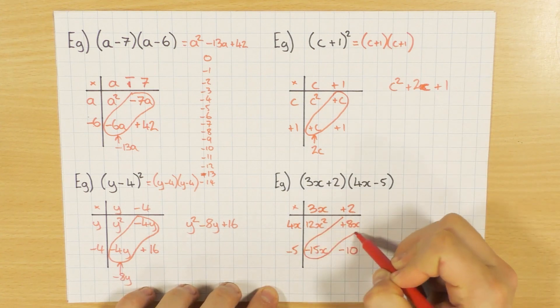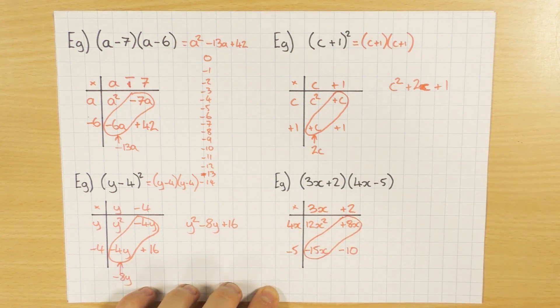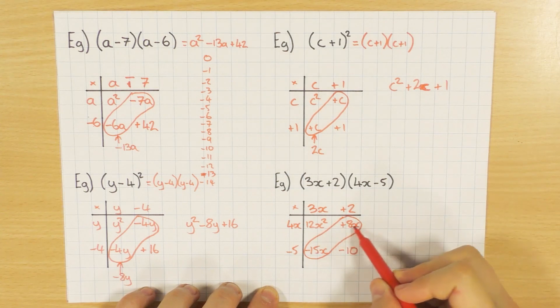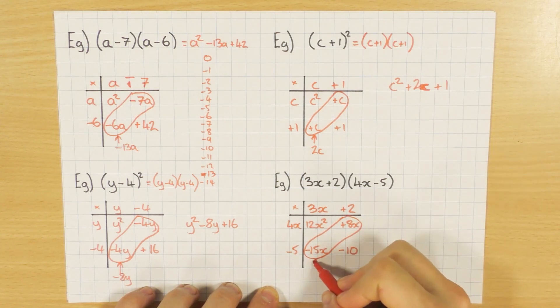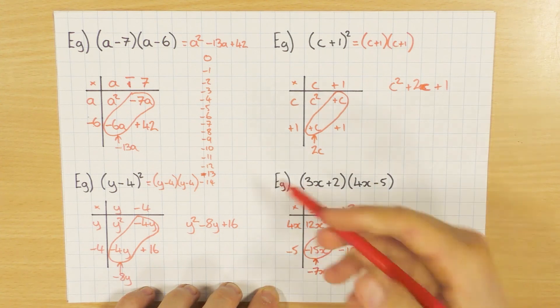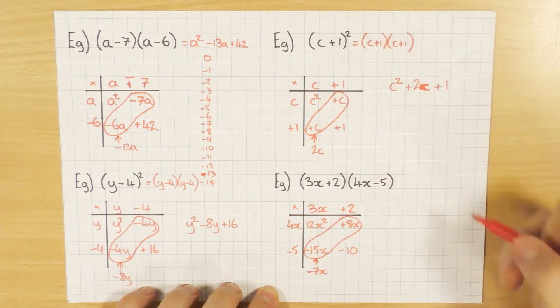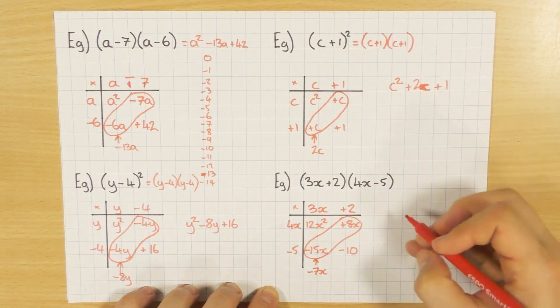I can then simplify these. Okay, so I'm going to have 8, positive 8, take away 15. That's going to give me minus 7x. Again you can draw a number line, but my number line doesn't quite go high enough, but obviously you can do one yourself. Don't forget to write out your answer: 12x squared minus 7x minus 10.